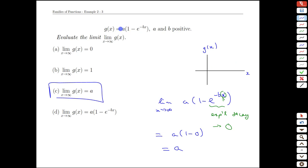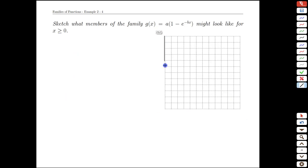With that, we can start doing some sketches. We know g of zero equals zero. We know that g is increasing. We know that g is concave down. And we know that g is heading towards a as x heads towards infinity.